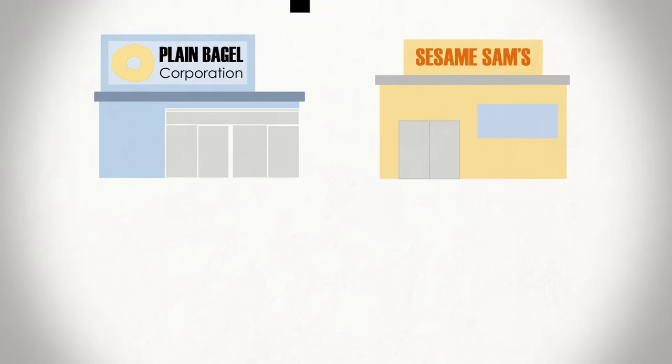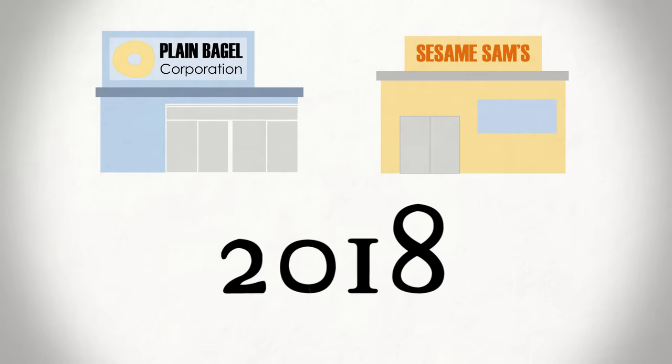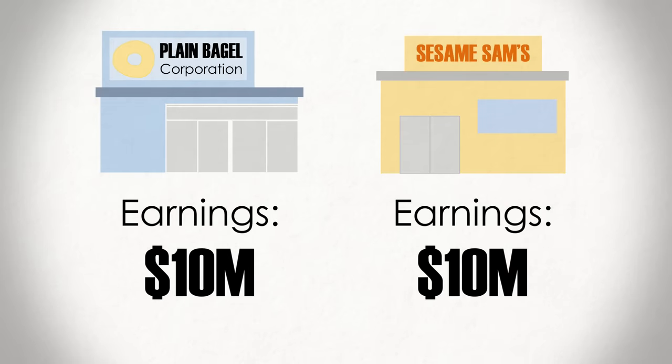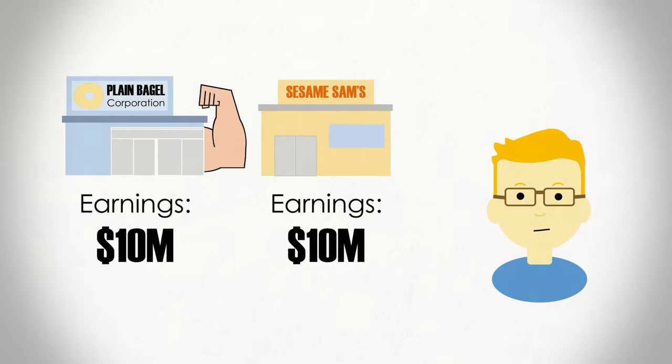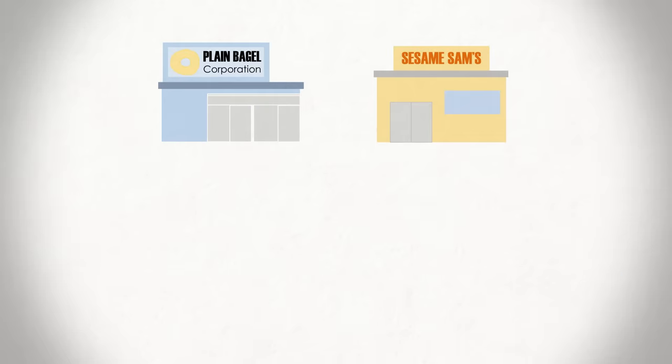So those are cash flows in a nutshell. But perhaps you don't fully understand why analysts give the measure so much merit. After all, all the confusing rules and assumptions in net income are meant to reflect a company's financial situation. Is that not good enough? Well, the income statement is useful to an extent. But cash flows offer a more complete picture and can provide valuable insights into the quality of a company's earnings or how sustainable they are. Let's go through an example. Imagine you have two bagel companies, Plain Bagel Co. and Sesame Sam's. Let's assume that the companies have identical balance sheets, and for 2018, they both record earnings of $10 million on their income statement. One might assume that these companies have similar financial strength.